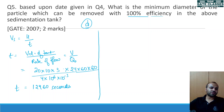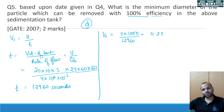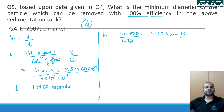Now we have calculated the detention time and we know the depth, so we can calculate the settling velocity. Settling velocity = depth / detention time, which comes out to be 0.2315 mm/s.